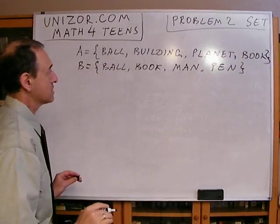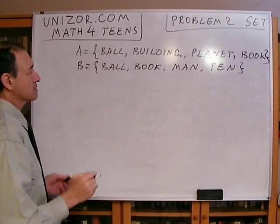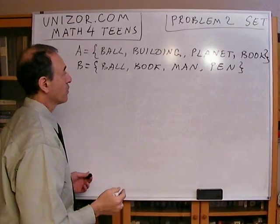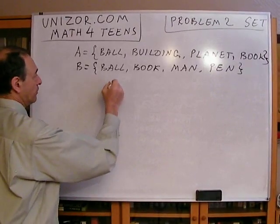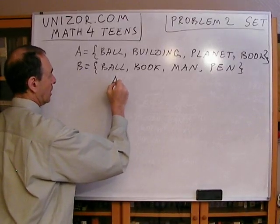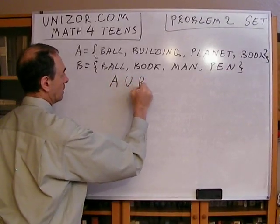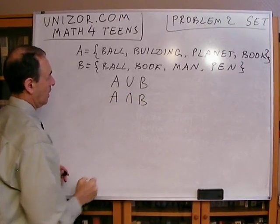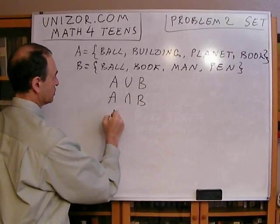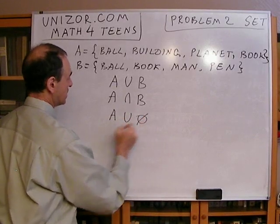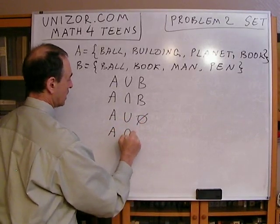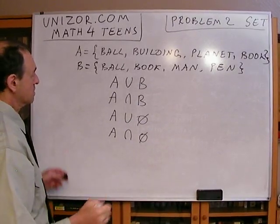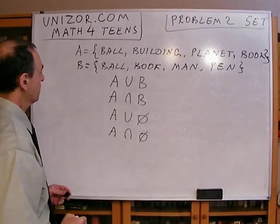Now, this small exercise will be about certain operations which you can do with these sets. So, I will do the union, I will do the intersection, then I will do union with an empty set, and intersection with an empty set. Just as an illustration of what this is all about.